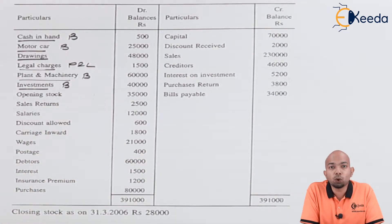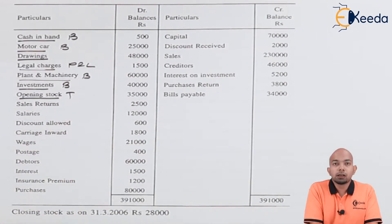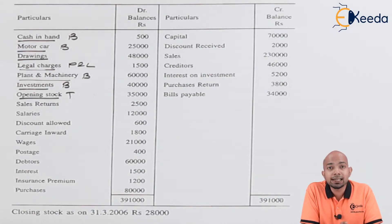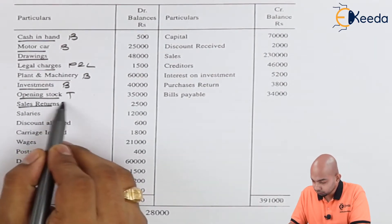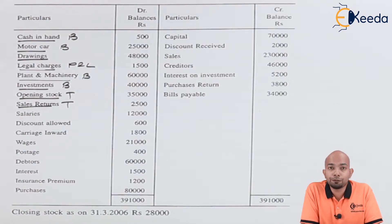Opening stock forms a part of the trading account, hence will be termed as T. Sales return is an item which is supposed to be subtracted from sales to find out the net sales in that financial year, hence it will be a part of the trading account. Salaries, as you know, is a part of office and administrative expense, hence it will be a profit and loss item.